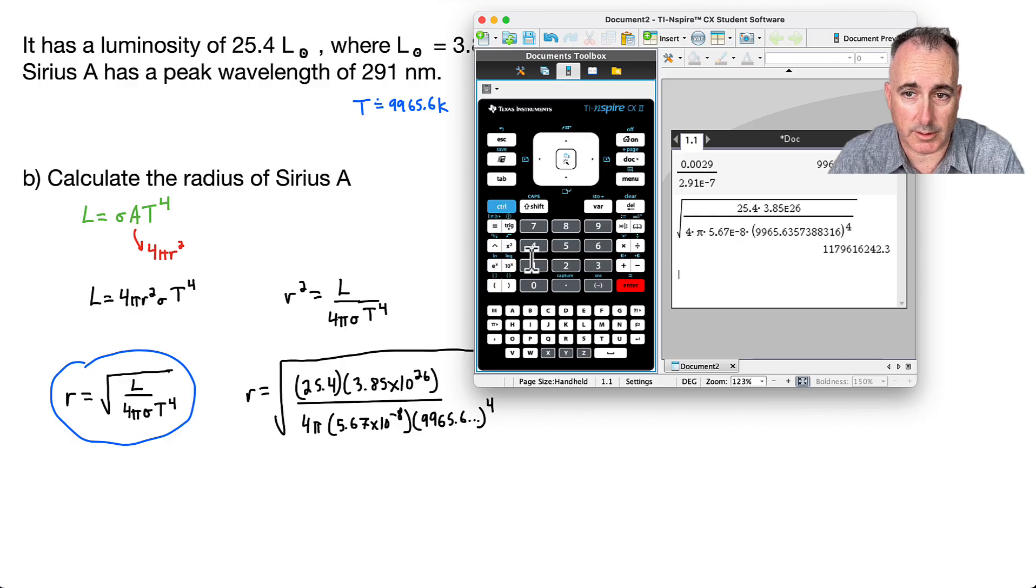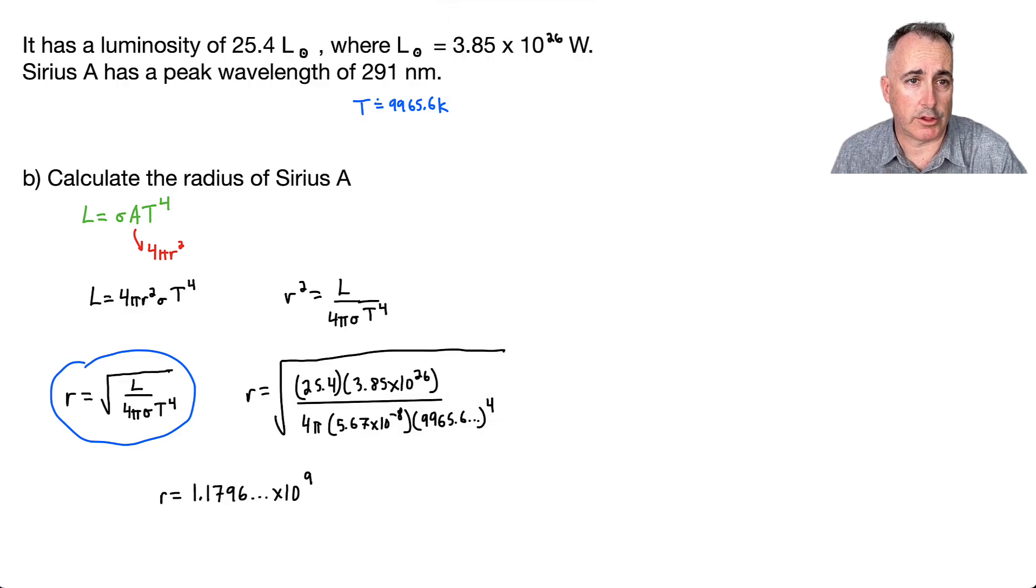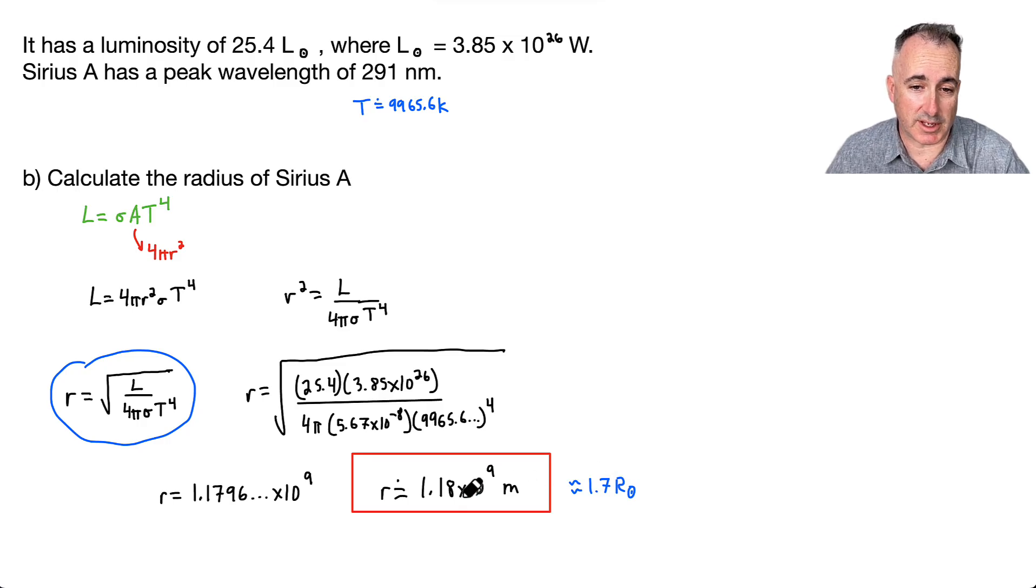So I get an answer of, oh, that's a big, big number, isn't it? So let's see, this will be, if I move the decimal over 1, 2, 3, 4, 5, 6, 7, 8, 9. So this will be 1.1796, whatever, times 10⁹. If I'm only allowed three significant figures for this, then I'll say the radius is approximately equal to 1.18 × 10⁹ meters. So this is around 1.7 times the radius of the sun, just for comparison. So this seems pretty big, yes, but I mean, it's nearly twice the size of our sun, so it's pretty big.